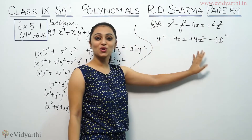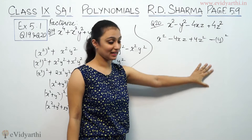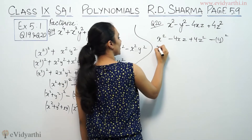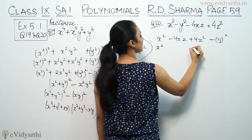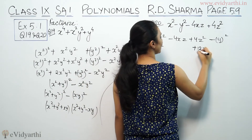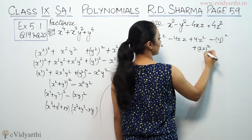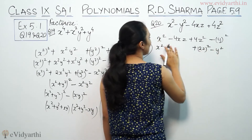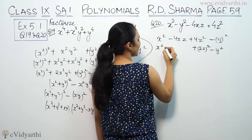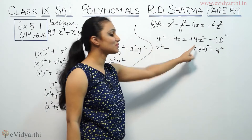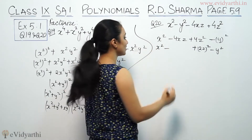We can see x² minus 4xz plus 4z² follows the form a minus b whole square, where we have 2 times x times 2z. So x² minus 4xz plus 4z² is x minus 2z whole square, minus y².